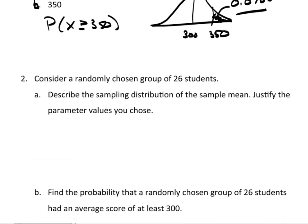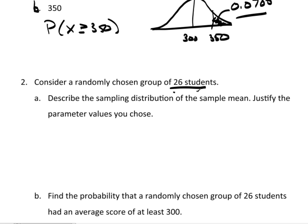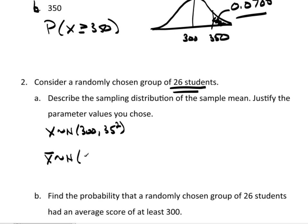Now suppose we have a randomly chosen group of 26 students. I want to describe the sampling distribution of the sample mean and justify the parameter values. We know x — the population — is normal with a mean of 300 and a variance of 35 squared. So x-bar would be distributed normal with a mean of 300 and a variance of 35 squared divided by 26.